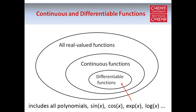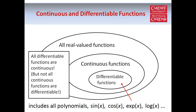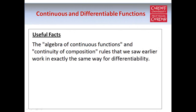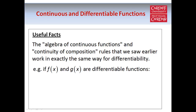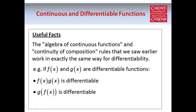The continuous functions we saw earlier, including polynomial functions, sin of x, cos of x, etc., are also differentiable. We haven't seen an example yet of a function which is continuous but not differentiable, but we will do that very soon. This also tells us that if we know a function is differentiable at a certain point, that automatically means it must also be continuous at that point. On the other hand, if we know a function is continuous at a certain point, that doesn't automatically tell us that it's differentiable. The algebra of continuous functions and composition rules work in exactly the same way for differentiable functions — if you have two differentiable functions, you can multiply them to get another differentiable function, and a composition will also be differentiable.